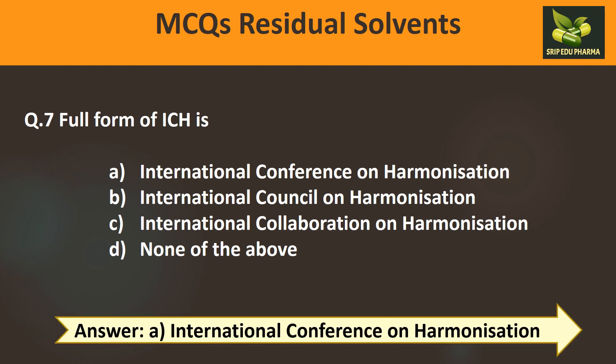Question 7: The full form of ICH is: A) International Conference on Harmonization, B) International Council on Harmonization, C) International Collaboration on Harmonization, D) None of the above. ICH stands for International Conference on Harmonization, so the answer is A.